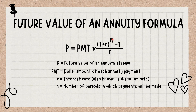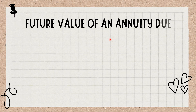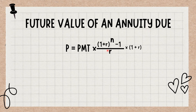Future value of an annuity due: With an annuity due, where payments are made at the beginning of each period, the formula is slightly different. To find the future value of an annuity due, simply multiply the ordinary annuity formula by a factor of (1 + R).